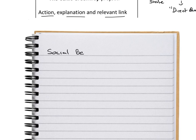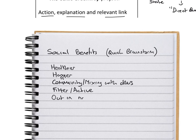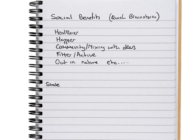Before you even begin, the question asks about two social benefits, so do a quick brainstorm — write down a couple of points on what social benefits might be. What would cycling and running on a greenway bring? Maybe healthier people, happier people. Remember the question is social, not economic, so you can't say jobs or money. Think: sense of community, mixing with others, being fitter, more active, happier, outside in nature — things people would benefit from having a safe cycling, running, and walking network.